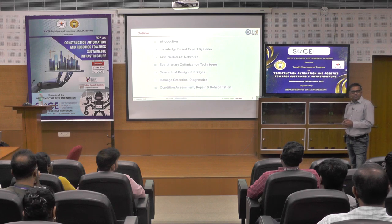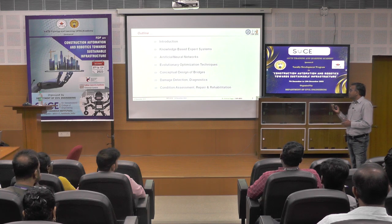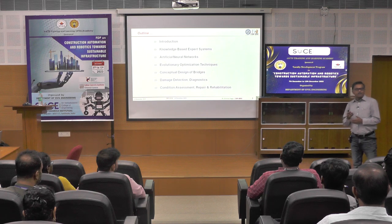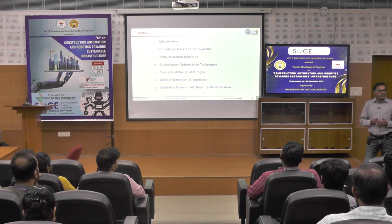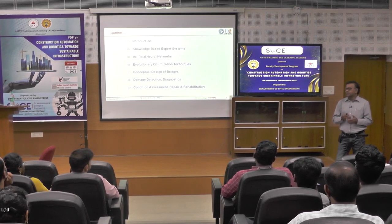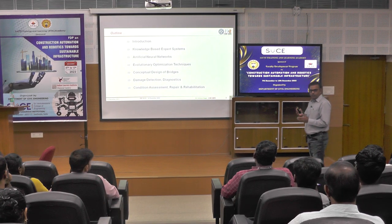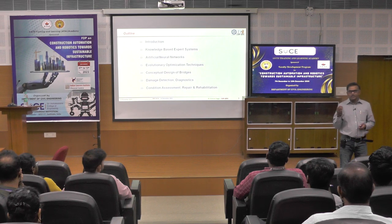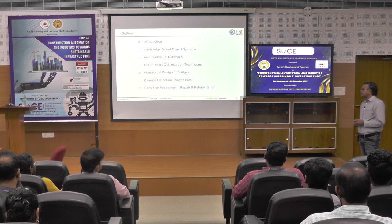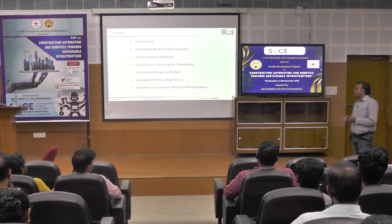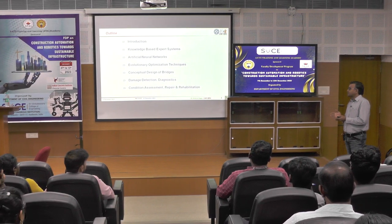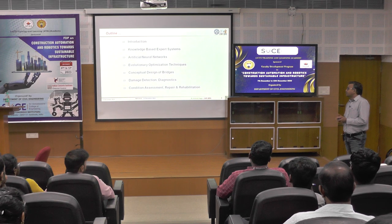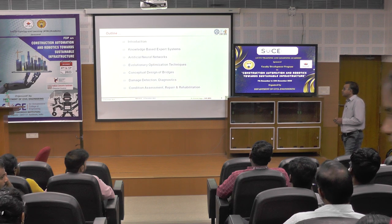The initial part is the artificial neural network, which has been developed by simulating the brain system. Our brain has neurons and dendrons — how it receives information, how it transfers information, and how it gives the concluding evidence. Based on that, artificial neural networks have been developed, programmed, and used for several kinds of works. Another AI technique I am going to talk about is evolutionary optimization techniques.